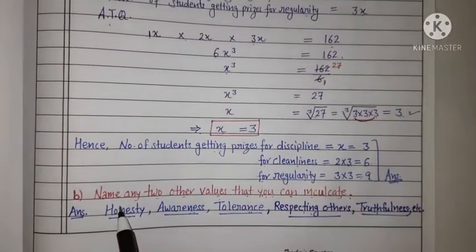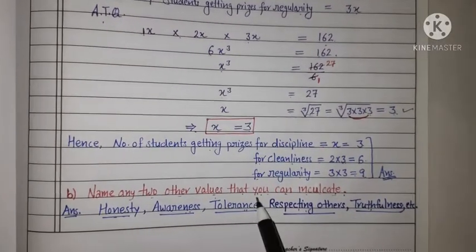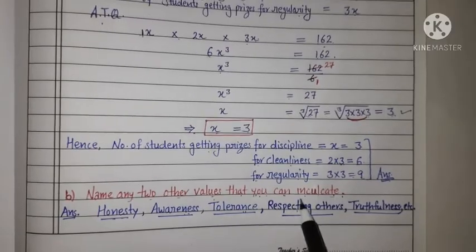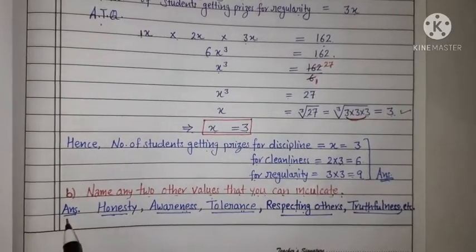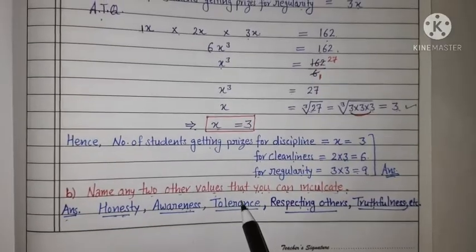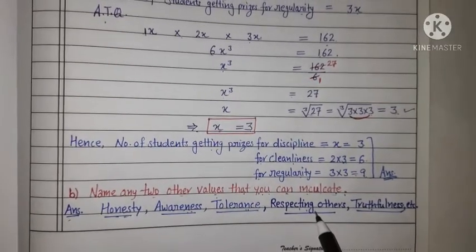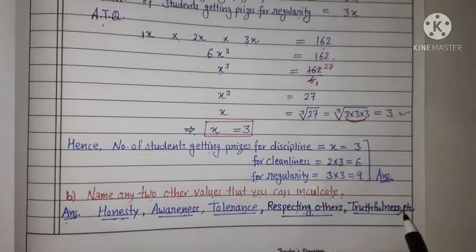Now part B, aap konsi do other values ko students ke andar add karna chahenge? Answer is honesty, awareness, tolerance, respecting others, truthfulness, etc.